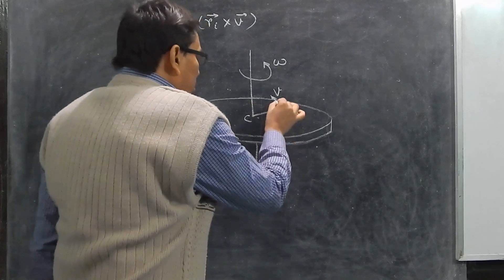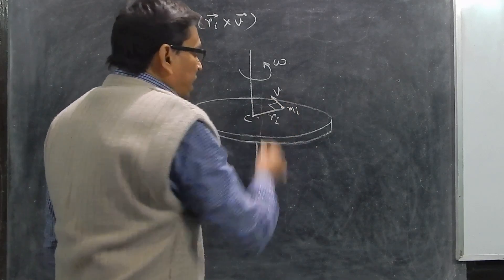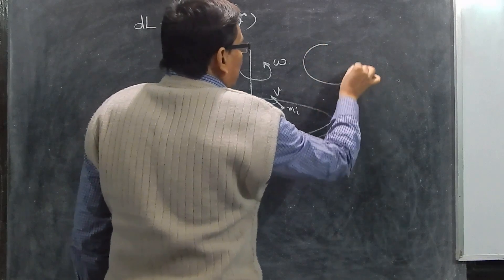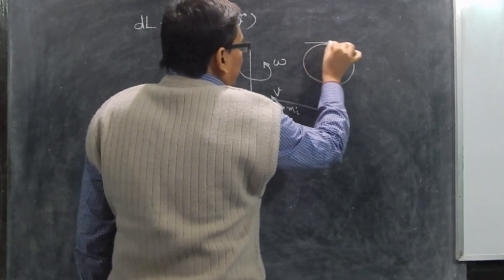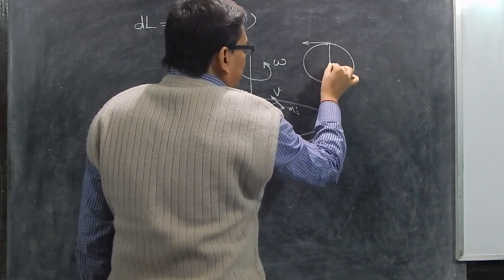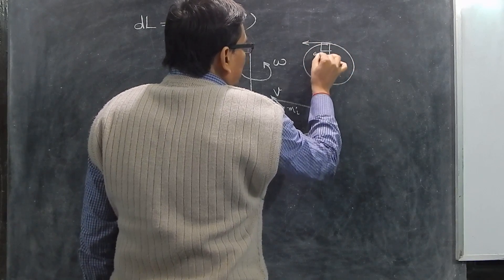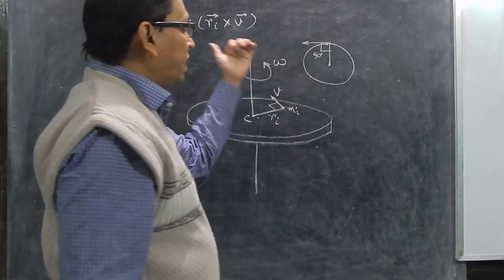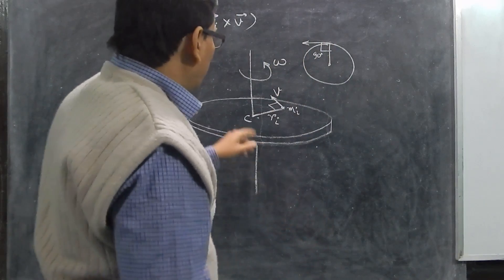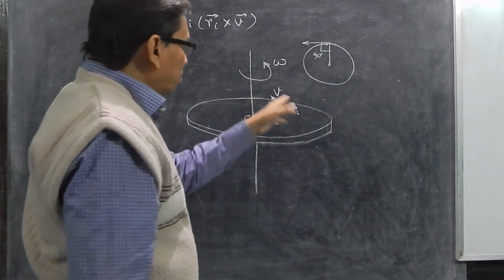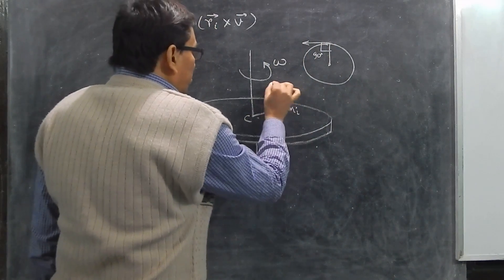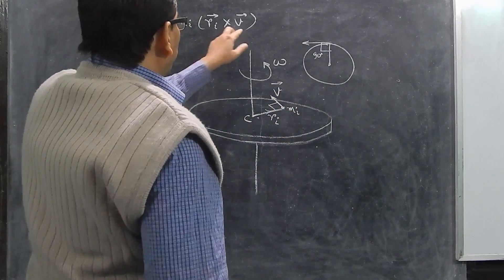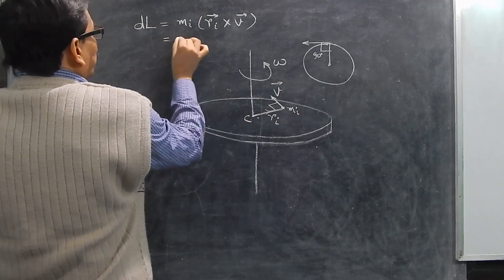In this case, v will make 90 degrees with ri. If you consider a circle and draw a tangent, the tangent must be 90 degrees with the radius because the radius is the normal to the tangent. So the same thing is happening here — the v vector is making 90 degrees with the ri vector.